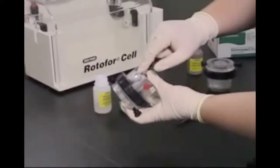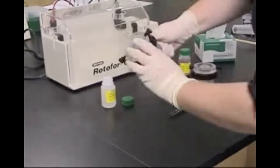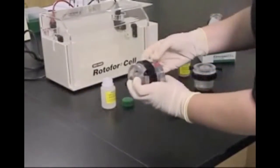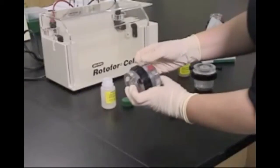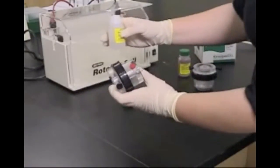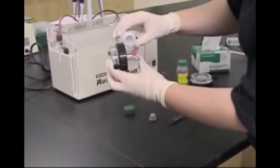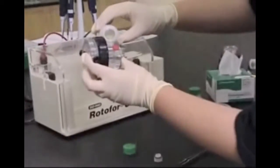Next, remove the vent button, which is located near the red button, and fill the anode chamber about three-quarters of the way full with the acidic electrolyte solution to prevent the membranes from drying out. Replace the vent button.